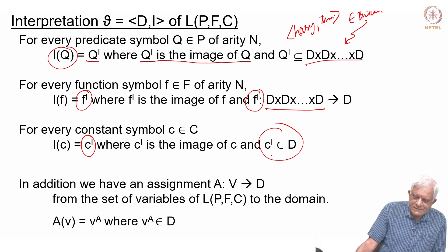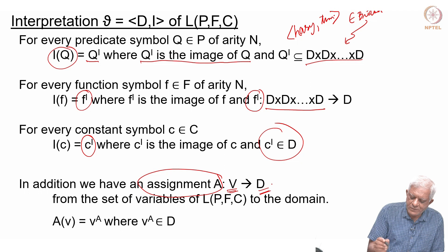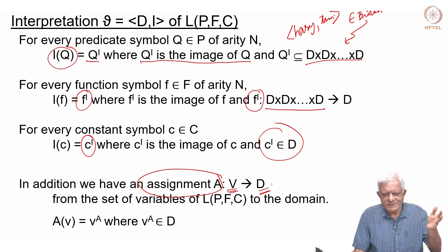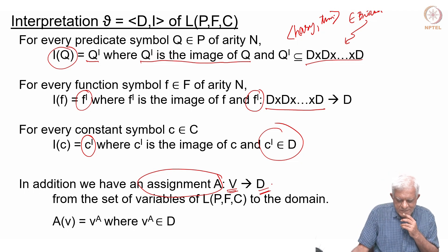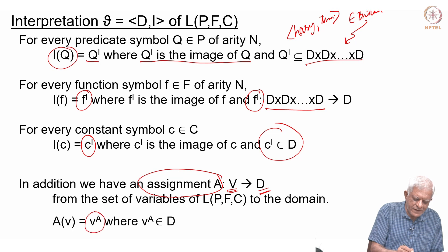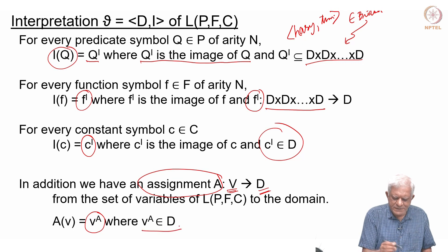In addition we have an assignment function, which we call a, that takes every element from the set of variables and maps it to the domain. So if we have variables x, y, z we might say x is 17, y is 21, z is 13 — that is an assignment. Once you give an assignment you can say what we are talking about. We use the term the image of a variable under assignment a as v superscript a, and it must be an element of the domain.